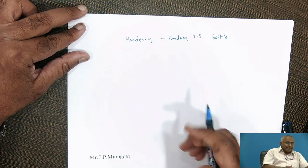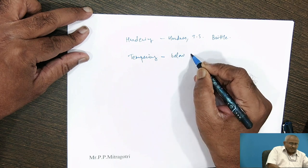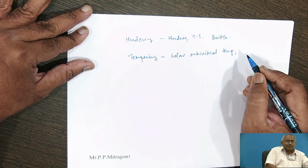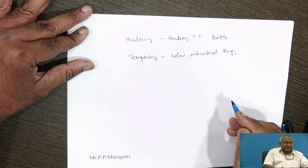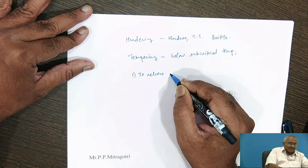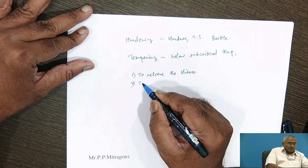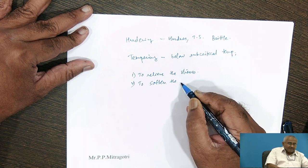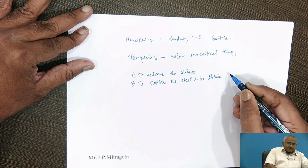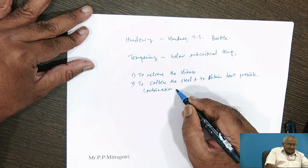What is tempering? Tempering is heating the steel to a level below the sub-critical temperature, holding it there for a sufficient period of time, and then cooling it slowly so that we achieve the required purposes. What are the purposes of tempering? First, to relieve the stresses developed during hardening — that is one of the major purposes of tempering. Second, to soften the steel.